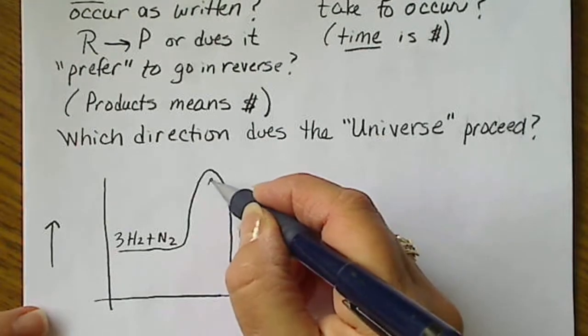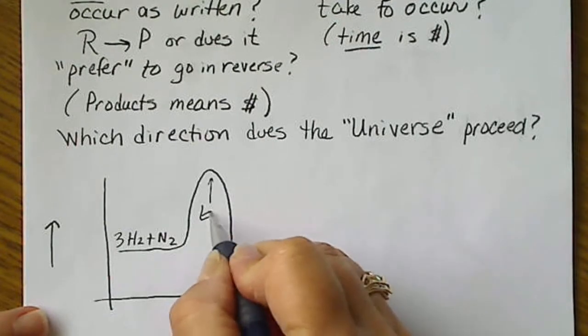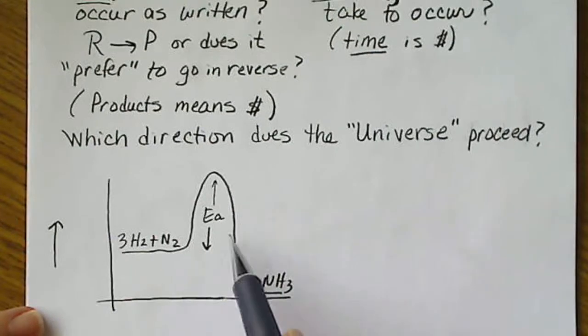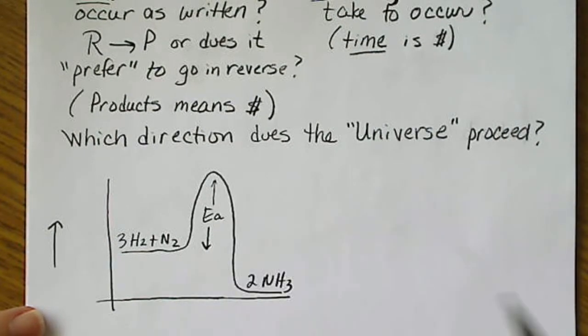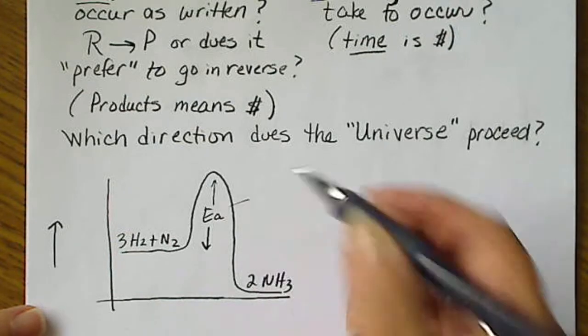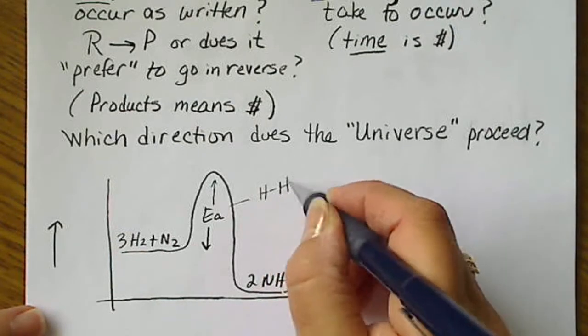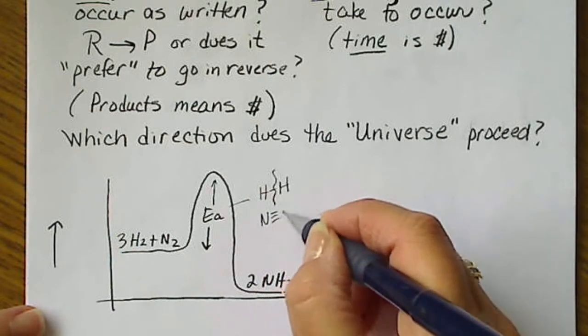This recall from the kinetics chapter is the activation energy, which is the energy barrier that keeps the reaction from occurring. And this activation energy corresponds to the breaking of the bonds of the reactants.